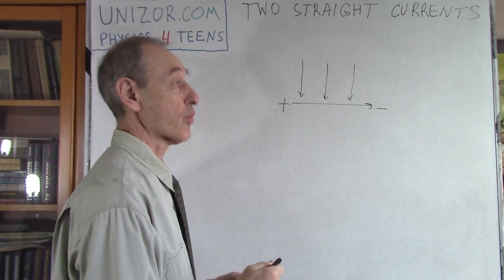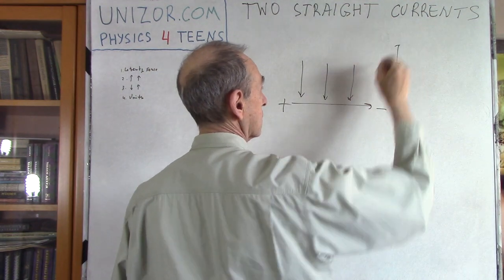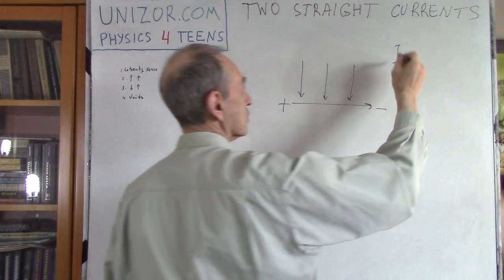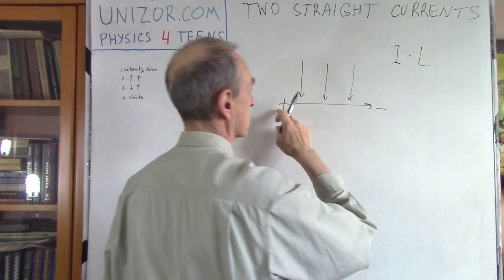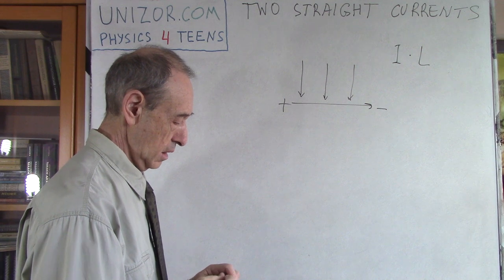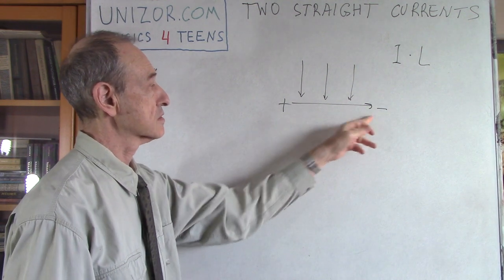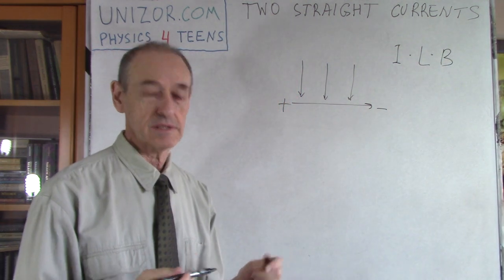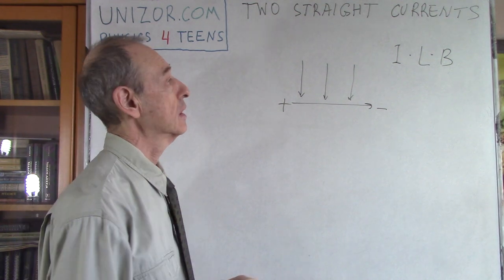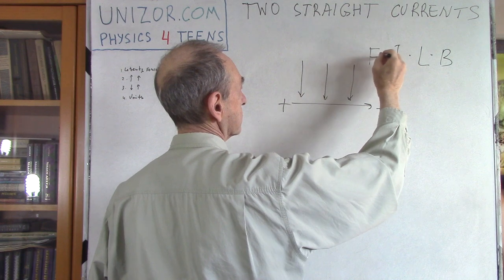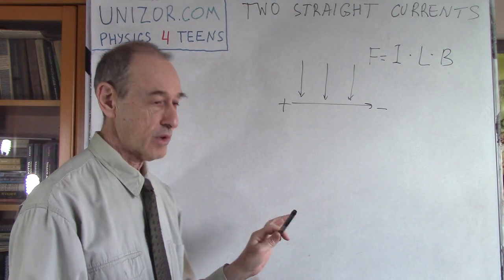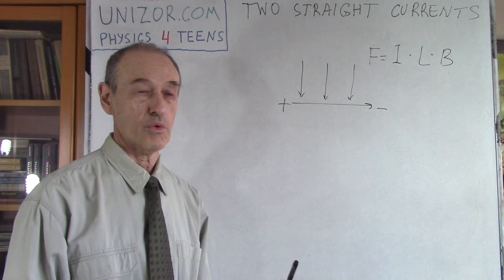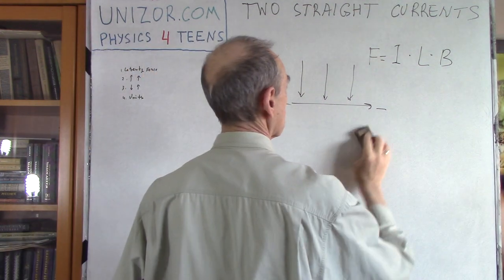That's the direction of the Lorentz force. The force is proportional to I — the electric current, the amperage — proportional to L, the length of the current, and proportional to B, the magnetic intensity of the magnetic field. That's the Lorentz force — just a brief reminder of what we covered before. Now we will use it for a very interesting purpose.